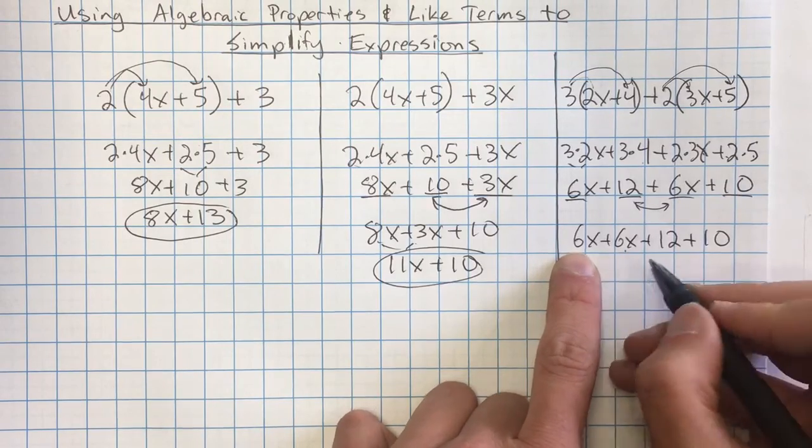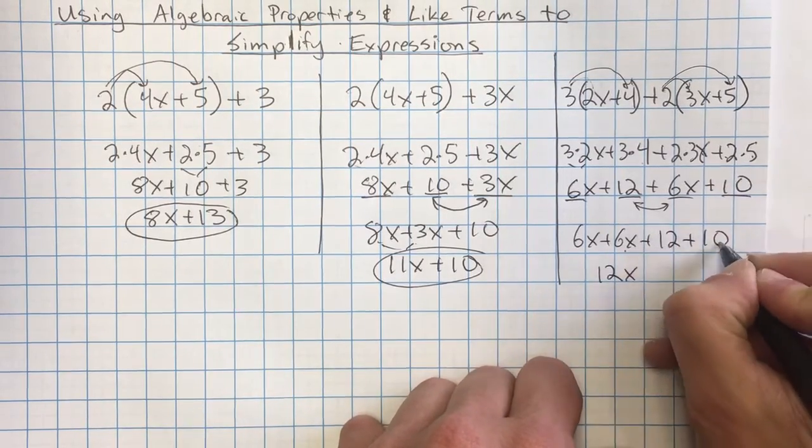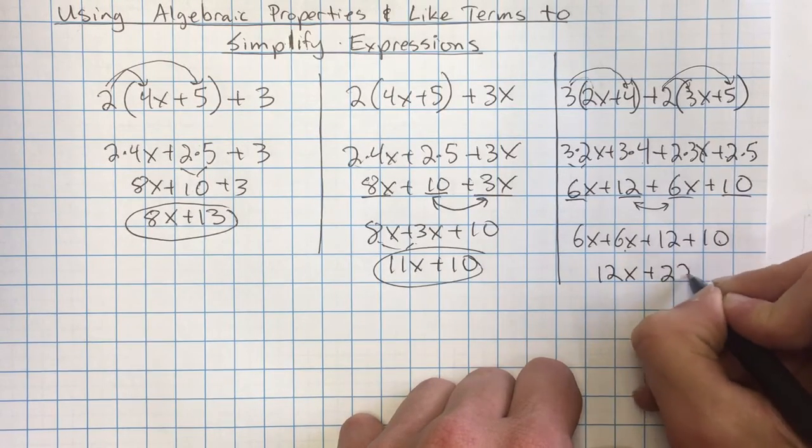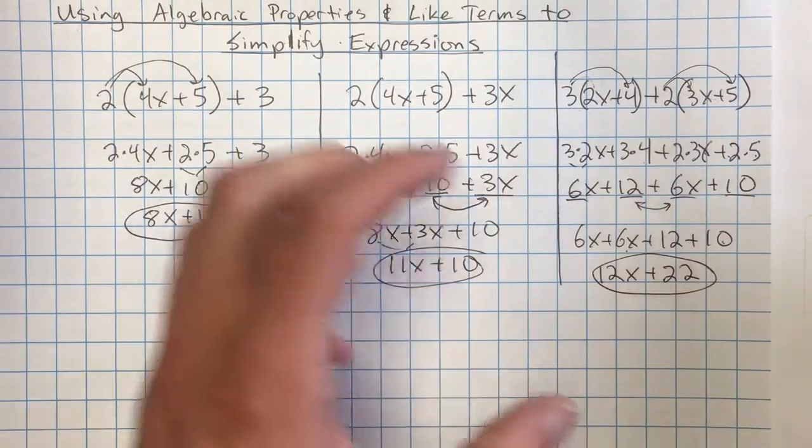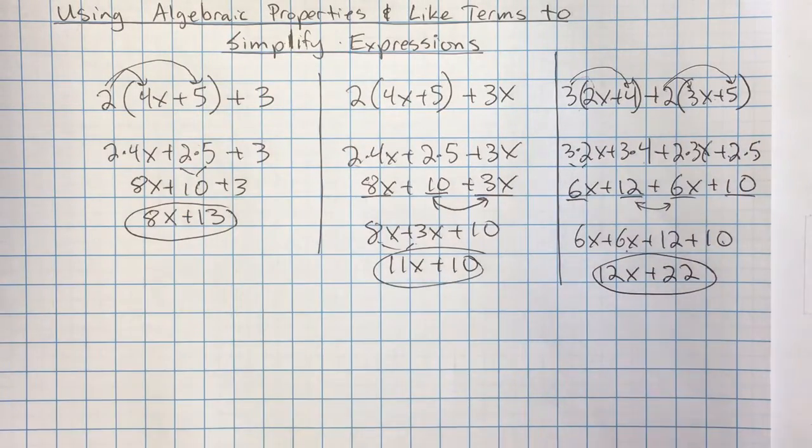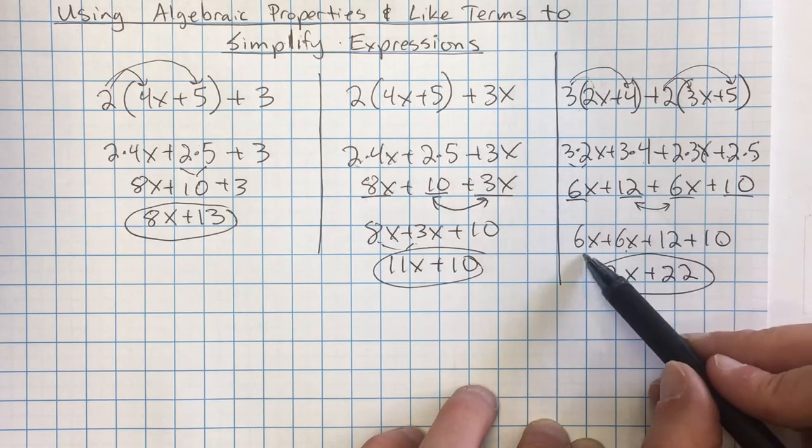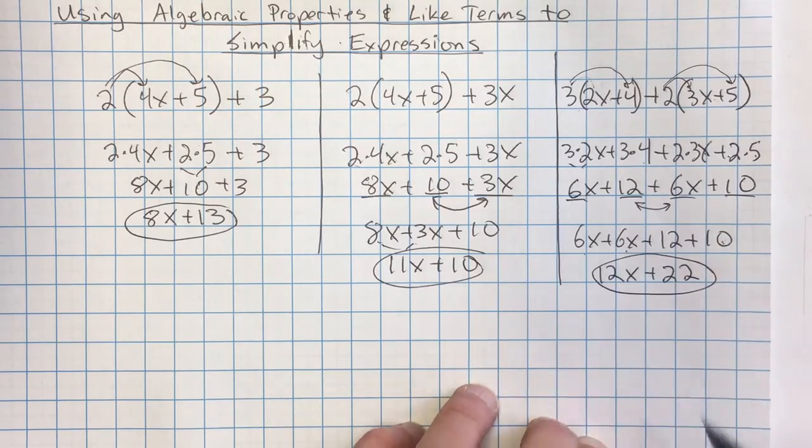And then I'm going to combine those like terms. So I've got 6x plus 6 more x's gives me a total of 12x plus 12 plus 10 gives me a total of 22. So I've taken this much larger problem and I've just simplified it down. I've applied those properties of the distributive property and the commutative property and then I added together the like terms. Only adding together the whole numbers and adding together the x's.